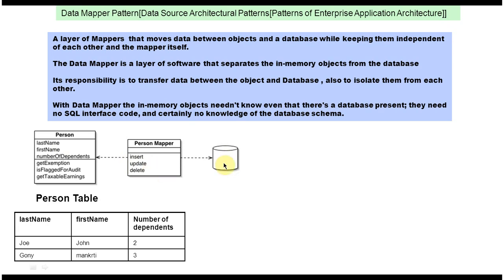We can also retrieve person information from the database. This is the layer which separates the Person object and the database. Using this Person Mapper layer, we can move data between the Person object to the database, and also from the database we can get values and formulate the Person object. So this is about this mapper.